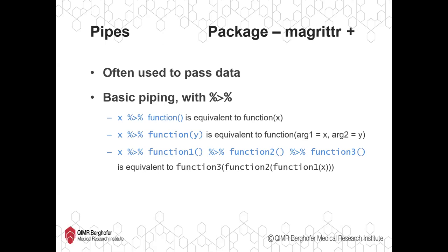In terms of the syntax, the basic pipe is percent sign, greater than sign, percent sign — so two percent signs with an arrow-like symbol in between. It looks like an arrow going from left to right surrounded by two percent signs.